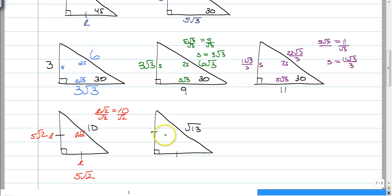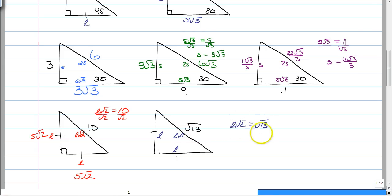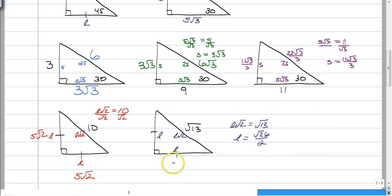And again, just to make it radically challenging, we have L, L, L root 2. L root 2 is equal to the square root of 13. After you divide both sides by the square root of 2 and get rid of your radical in the denominator, you're going to have that L is equal to the square root of 26 over 2, which you cannot simplify any further, so you just have the square root of 26 over 2 for both of them.